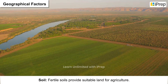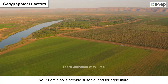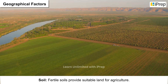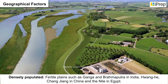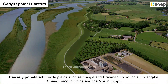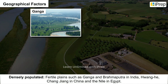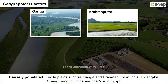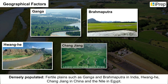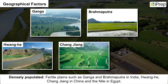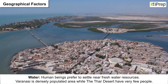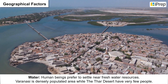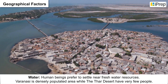Soil: Fertile soils provide suitable land for agriculture. Example: Densely populated fertile plains such as the Ganga and Brahmaputra in India, Huanghe and Changjiang in China, and the Nile in Egypt.